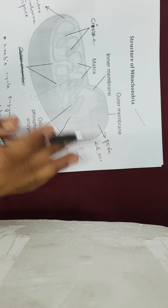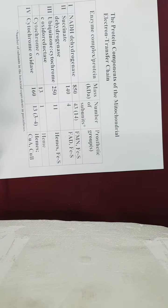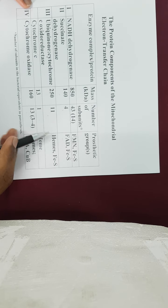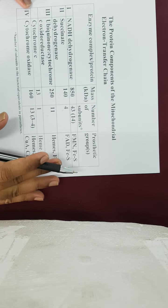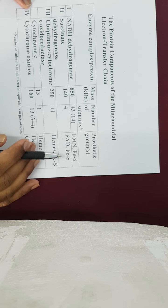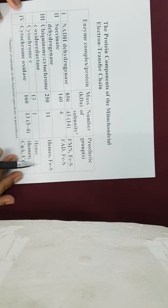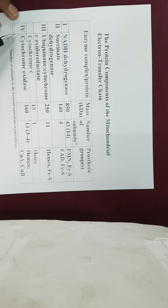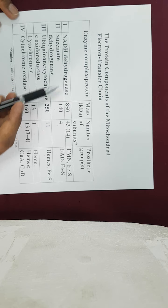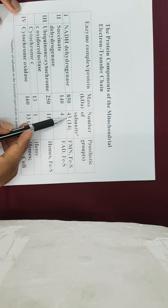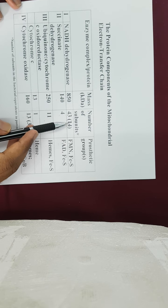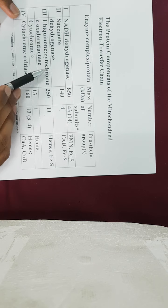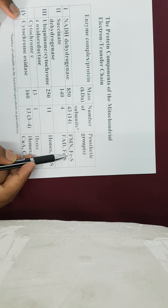Now we need to discuss the components of the electron transport chain. The electron transport chain has four complexes: Complex 1, Complex 2, Complex 3, and Complex 4. Complex 1 is called NADH dehydrogenase; its size is around 850 kiloDaltons, with 43 subunits in eukaryotes and 14 subunits in bacteria, and its prosthetic groups are FMN and iron-sulfur centers. Complex 2 is called succinate dehydrogenase, which is also a Krebs cycle enzyme involved in the conversion of succinate to fumarate.